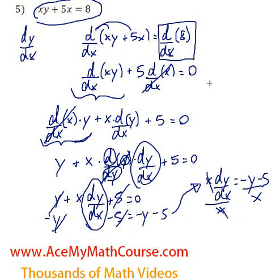dy/dx is equal to negative y minus 5 over x. Well today I'm just a little bit out of it, forgive me. So that is our answer: dy/dx is equal to negative y minus 5 over x.